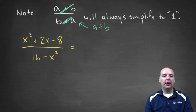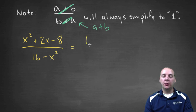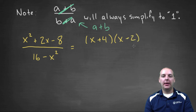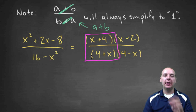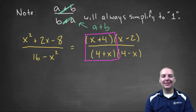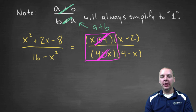Let's try an example. We have x squared plus two x minus eight divided by sixteen minus x squared. The numerator factors as x plus four times x minus two. The denominator is a difference of squares, which factors as four plus x times four minus x. The two I'm looking at are x plus four and four plus x. Since this is plus instead of minus, these are actually identically the same. We can cancel these two, and our final result would be x minus two divided by four minus x.